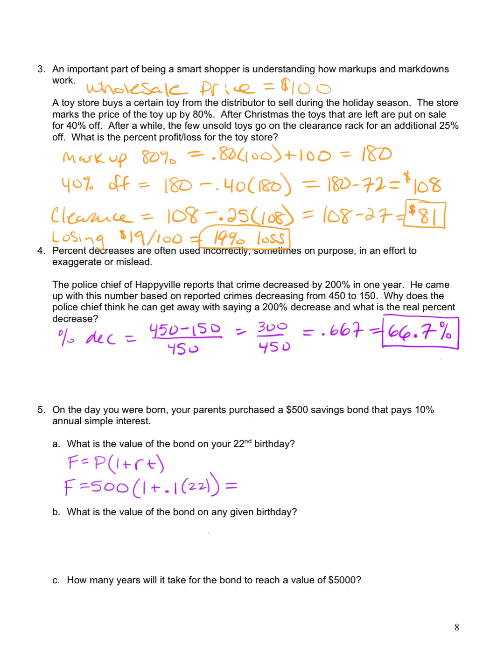And then we just do this calculation. So start by following the order of operations. We want to do what's inside the parentheses first, right? The order of operation is PEMDAS, parentheses first. And then inside these parentheses we have a multiplication and we have an addition. We always do multiplication before addition in the order of operations. So I'm going to do 0.1 times 22, and I get 2.2. And then I'm going to add 1 to that, and I get 3.2. So this is going to be 500 times 3.2, which is $1,600.